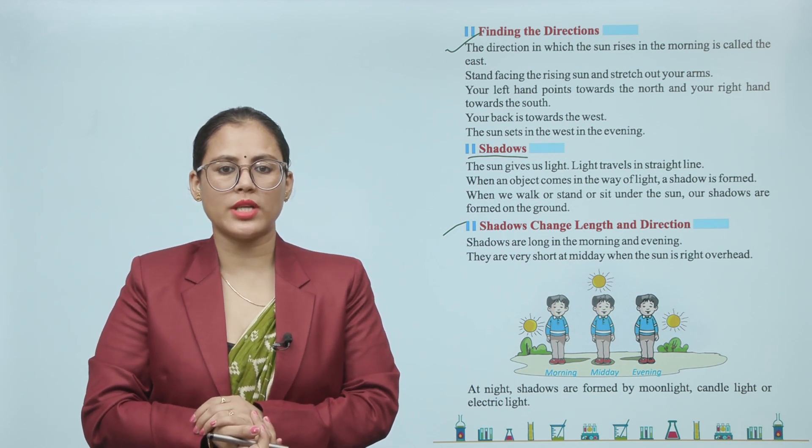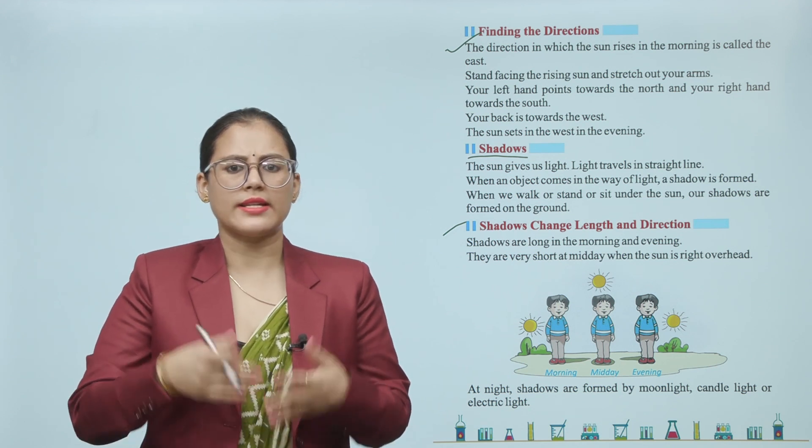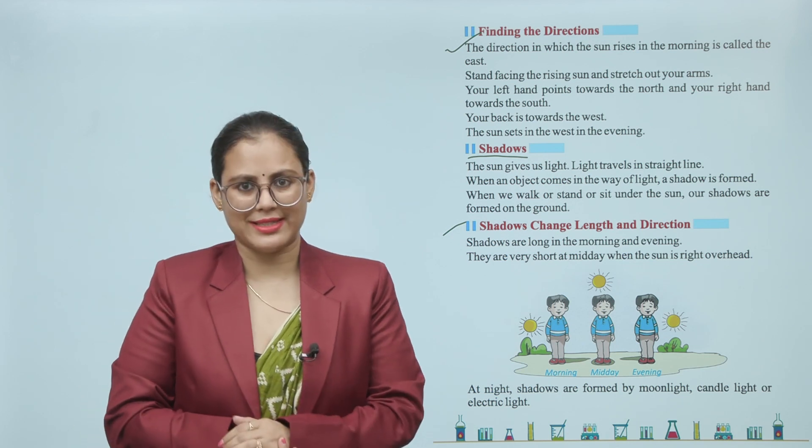At night, shadows are formed by moonlight, candle light, or electric light. Shadows are very long in morning or evening and very short at midday when the sun is right above our head.